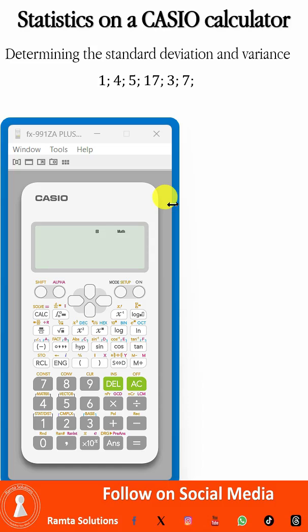How do we find the standard deviation and variance of a data set using a CASIO calculator? Before we proceed, we know that variance and standard deviation can be related using this formula here.